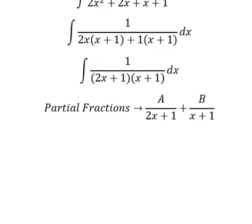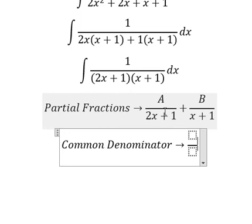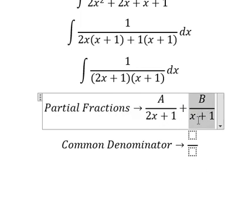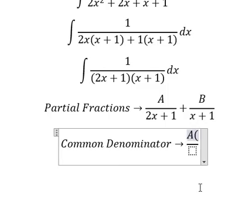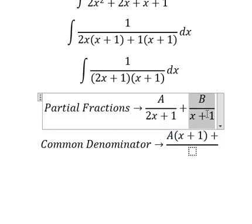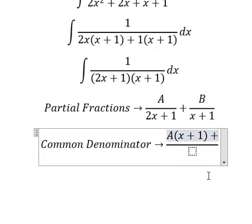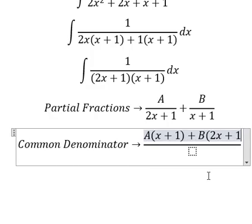Now we can find the common denominator. This one is missing (x + 1), so capital A multiplied by (x + 1). This one is missing (2x + 1), so capital B multiplied by (2x + 1).